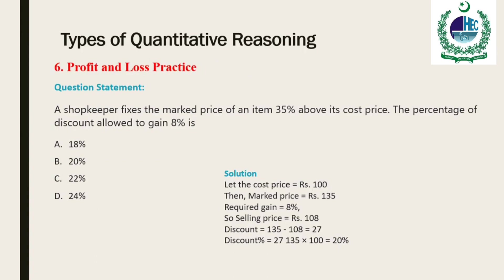The profit and loss formula is used in mathematics to determine the price of a commodity in the market and understand how profitable a business is. Every product has a cost price and a selling price. Based on the values of these prices, we can calculate the profit gained or the loss incurred for a particular product. The important terms covered here are cost price, fixed cost, variable cost, and semi-variable cost, selling price, marked price, list price, margin, etc.